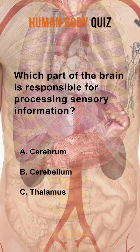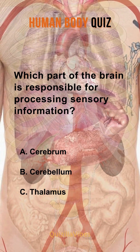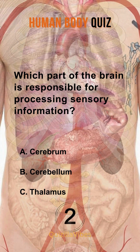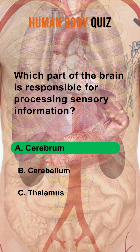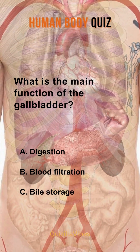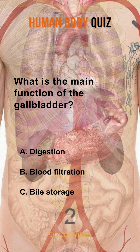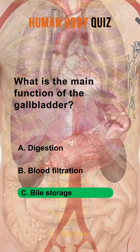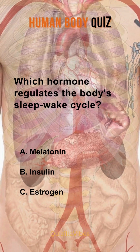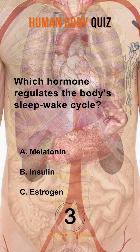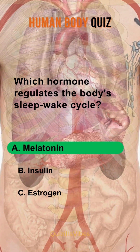Which part of the brain is responsible for processing sensory information? Cerebrum. What is the main function of the gallbladder? Bile storage. Which hormone regulates the body's sleep-wake cycle? Melatonin.